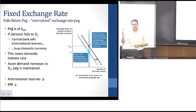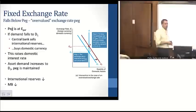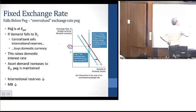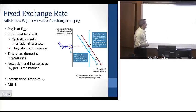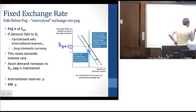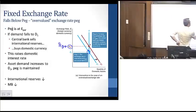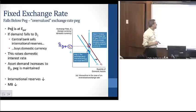We're going to look at two cases of how a central bank manages a fixed exchange rate. The first is an overvalued exchange rate peg, where the exchange rate falls below the peg. Here, E-par is our exchange rate peg. The exchange rate might fall below that, ending up at a point like 0.1, and the central bank wants to maintain the exchange rate at point 0.2, at E-par.